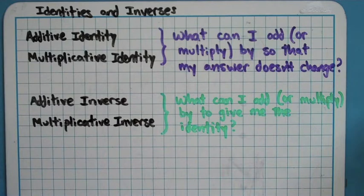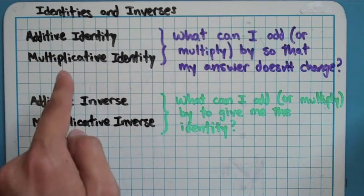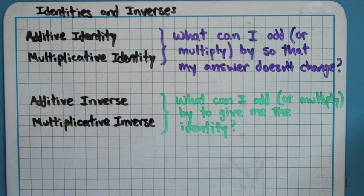So, an additive identity and a multiplicative identity. It's the same thing, they're both an identity, but this word right here, additive or multiplicative, just kind of tells you if you're dealing with adding or multiplying.